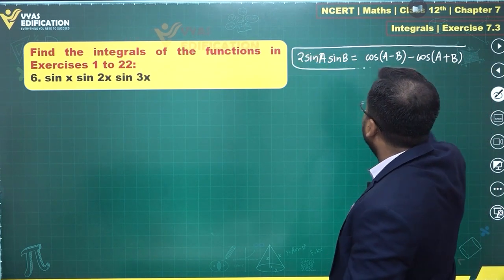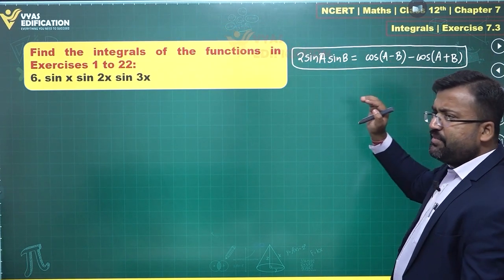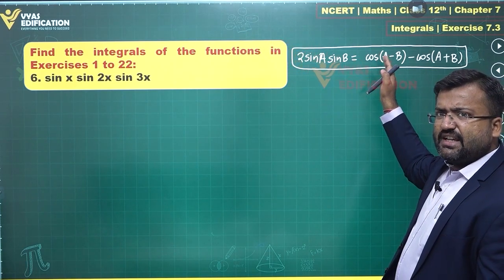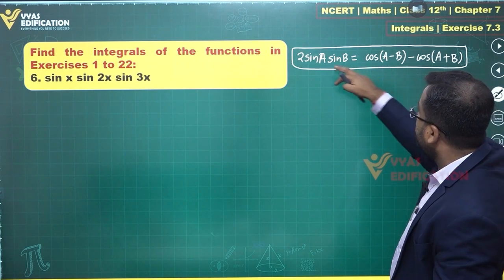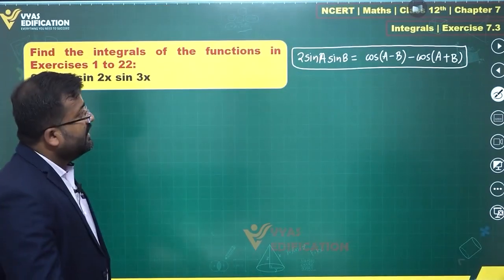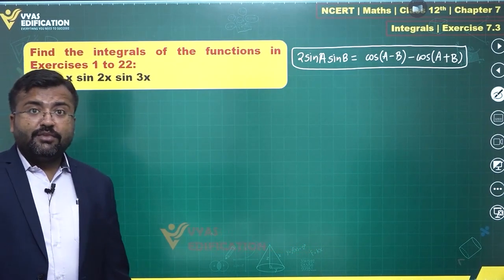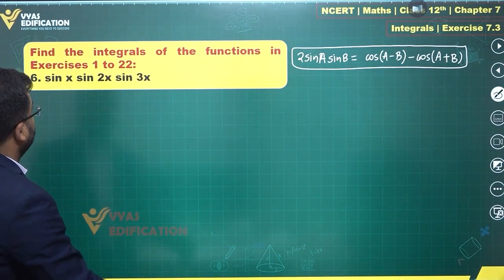2 sin(a) sin(b) is equal to cos(a-b) first minus cos(a+b). This is the result that we have. Cos(a-b) equals cos(a)cos(b) + sin(a)sin(b). This is cos(a)cos(b) - sin(a)sin(b). Subtracting them will give me 2 sin(a) sin(b). That is the result that we borrowed from trigonometry and now we will use that result for this.